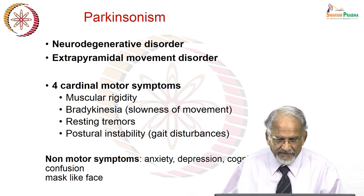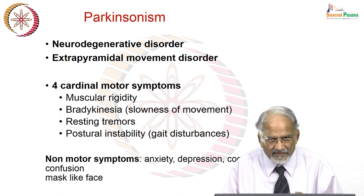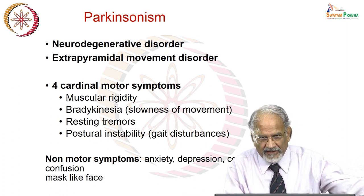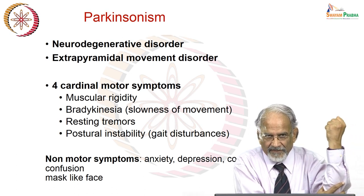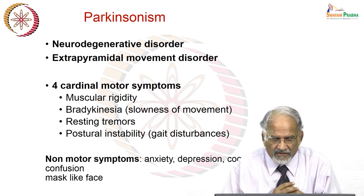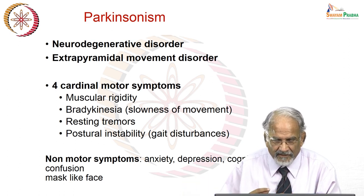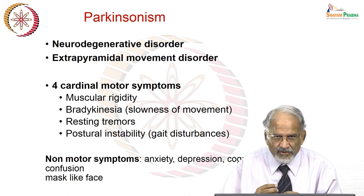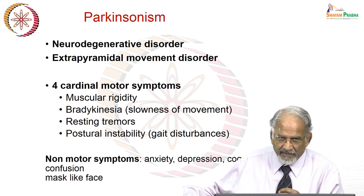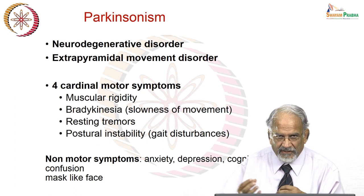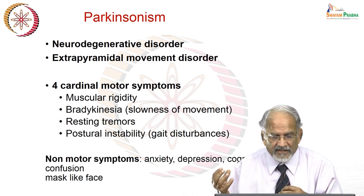One is muscle rigidity, also called cog wheel rigidity — if you move the limb like this, it is like a cog wheel, and this is the typical rigidity of Parkinsonism. When a person has any activity to be done, the action is usually slower than normal. If a person takes 5 minutes to come from the main entry to the podium instead of 30 seconds, this is called bradykinesia.